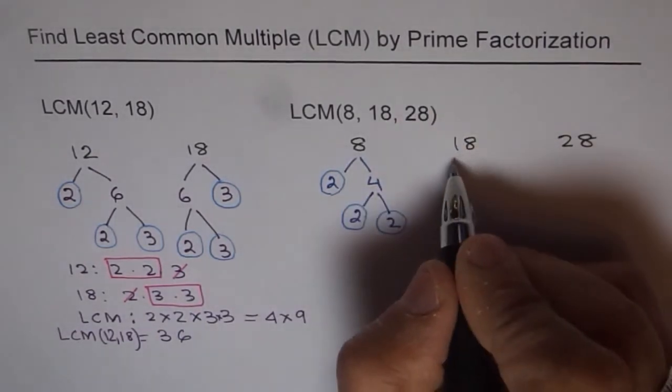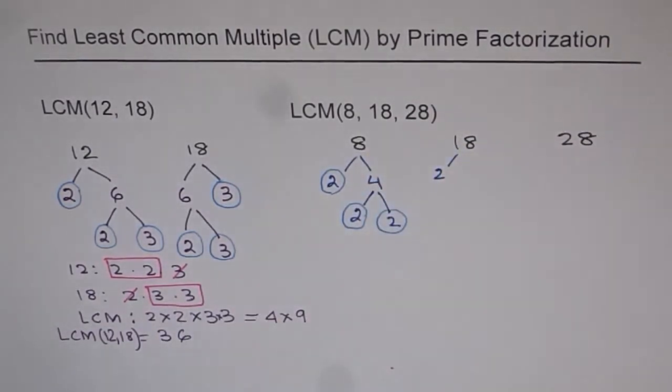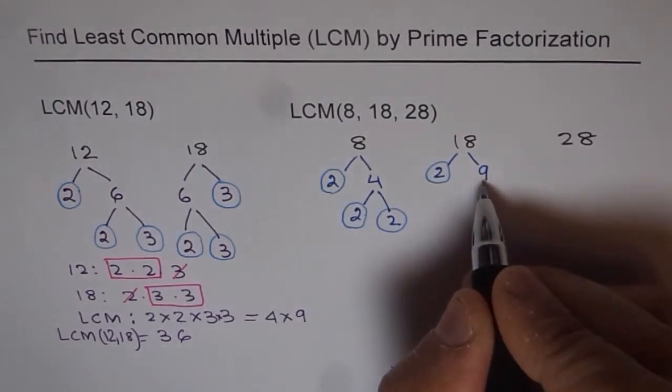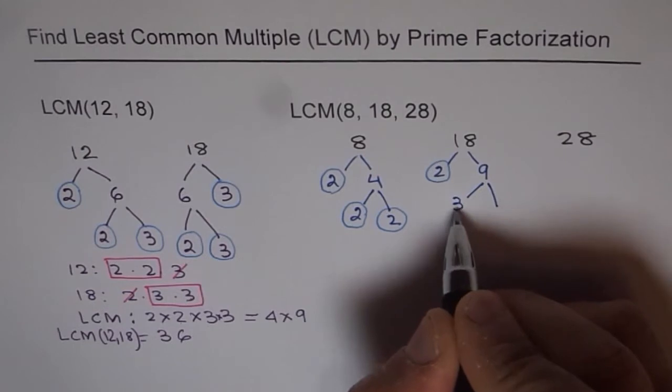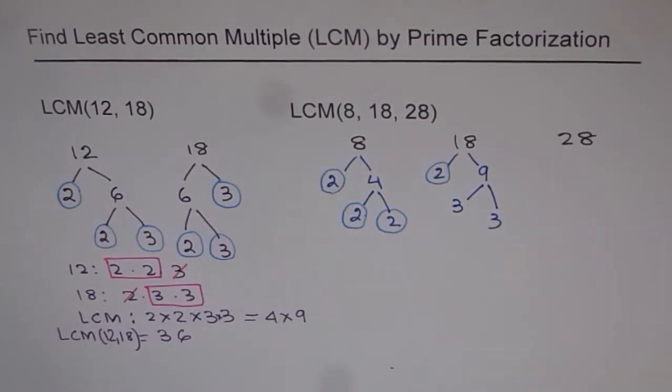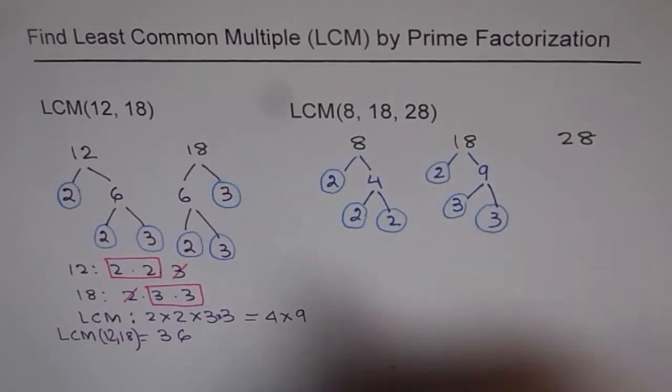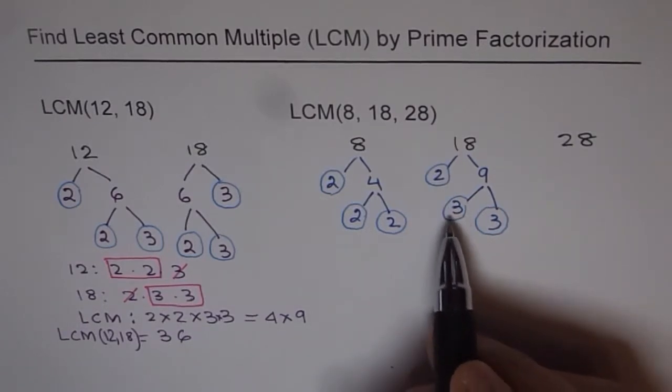Now, let's do for 18. 18 is an even number, so we'll start with 2. And since 2 is a prime number, we can circle it. And then it is 2 times 9. 9 is a composite number. It could further be factored. So, it can be factored as 3 times 3. Now, 3 and 3 are prime numbers. So, let's circle them. We get prime factorization of 18, which is 2 times 3 times 3.